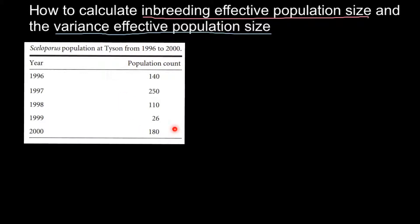We're going to take data from this table of a population of lizards at Tyson from 1996 to year 2000. What is the difference between inbreeding effective population size and the variance effective population size?